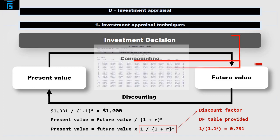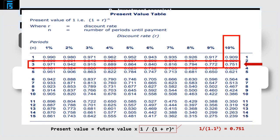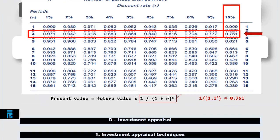Alternatively, this can be looked up on tables. Get used to using these tables — they save loads of time. So, now we can calculate the present value of a future amount. This is saying what the future amount is worth in today's terms.